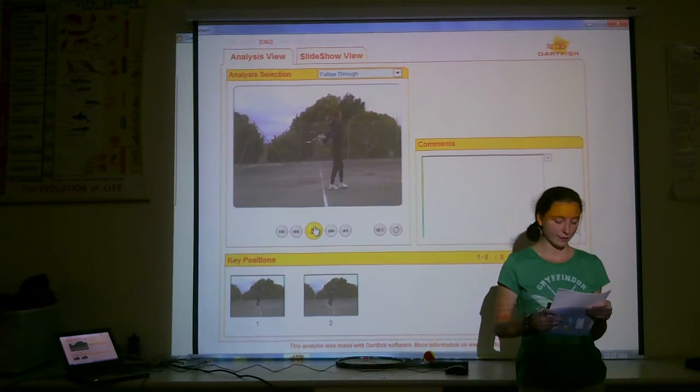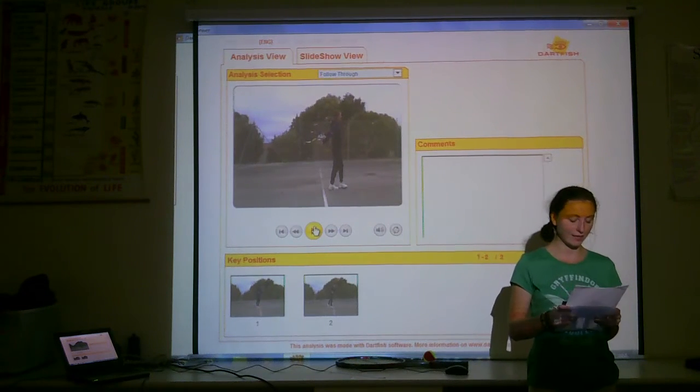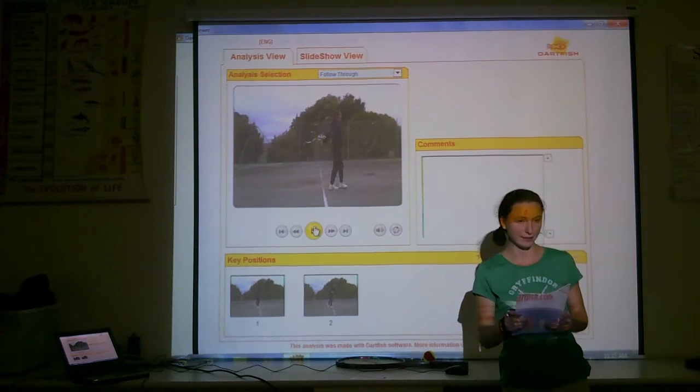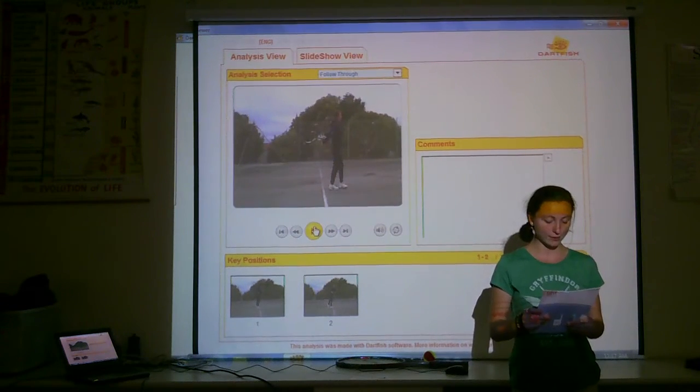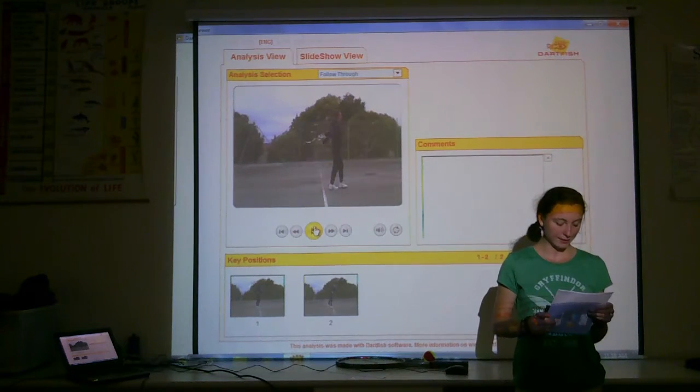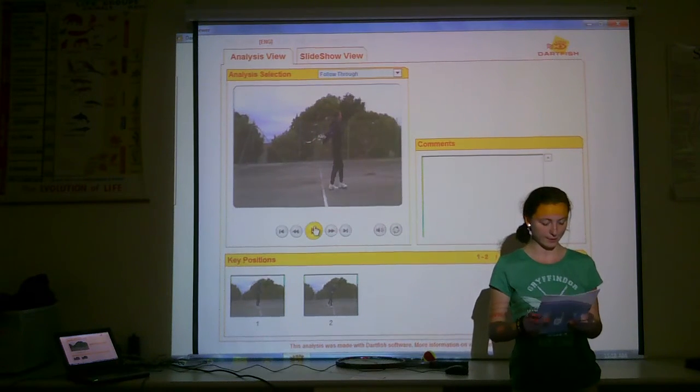This movement activates the rectus abdominis, external obliques, and latissimus dorsi for the trunk rotation, and the right rhomboids, bicep, triceps, and tricep system of the arm. Similarly, the ball and socket joint is utilized for the rotation of the arm. The right arm, once again, does not fully extend as this does not provide sufficient amount of force to hit the tennis ball.